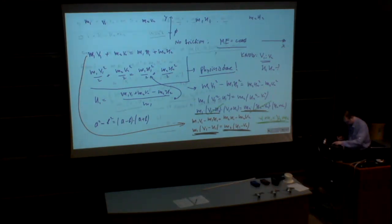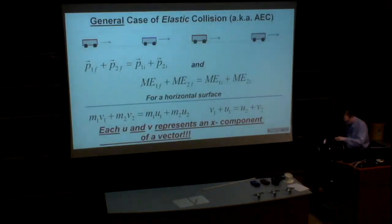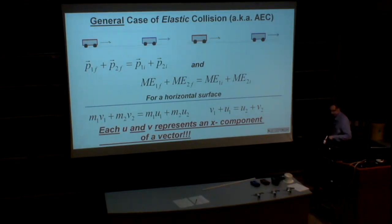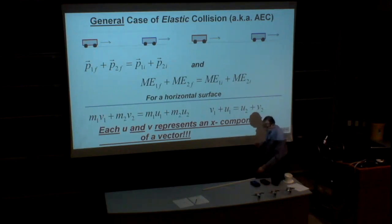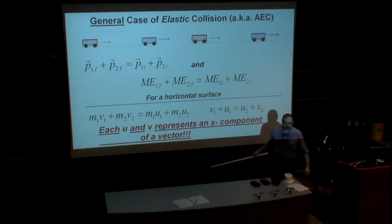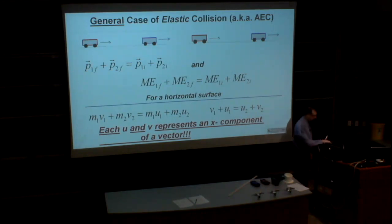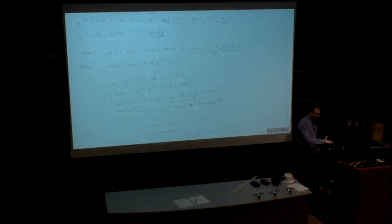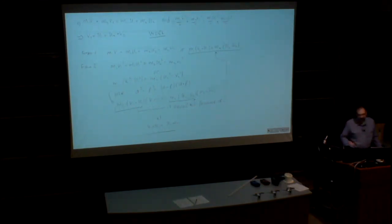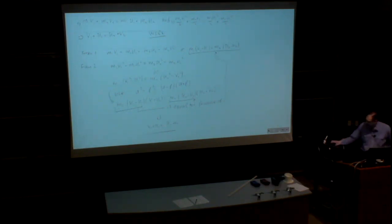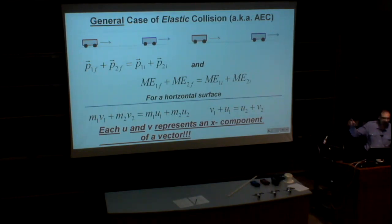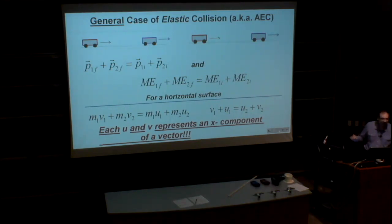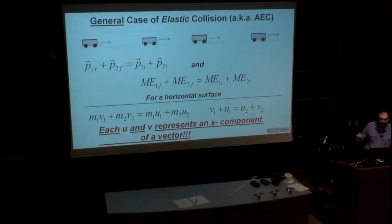We have proved that instead of using a quadratic equation, we can use a simple linear equation for the elastic collision case. So for every absolutely elastic collision, we use these two equations: the law of conservation of linear momentum, and V1 + U1 = V2 + U2. These equations are linear and simple to solve. You don't have to redo all that calculation every time — just remember that this linear equation replaces the law of conservation of mechanical energy when there is no friction.